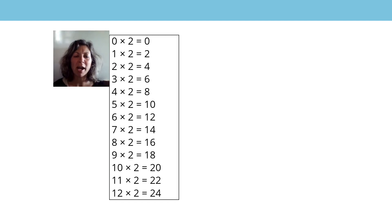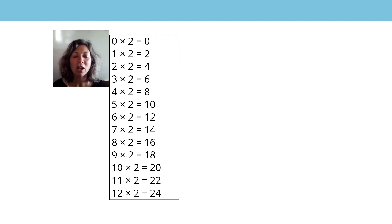We're going to practice saying our two times table both ways now, and we're going to start with this one. We're going to start together and then I'm going to stop and you're going to carry on chanting all the way down to 12 twos are 24. Do you think you can do that? Of course you can, you're fantastic. Are we ready to start together?